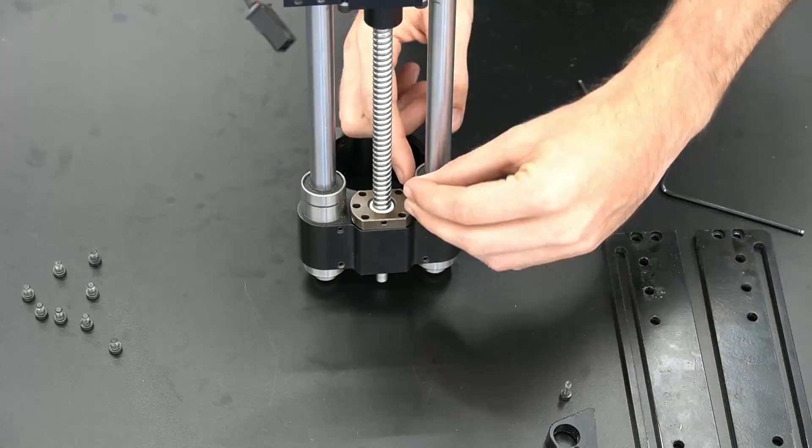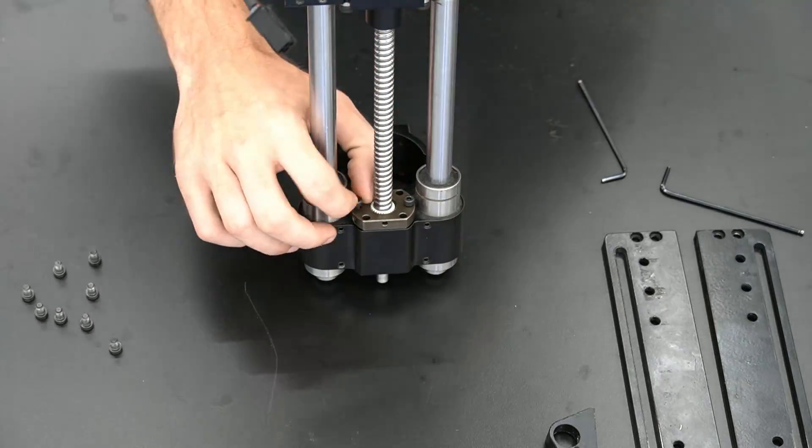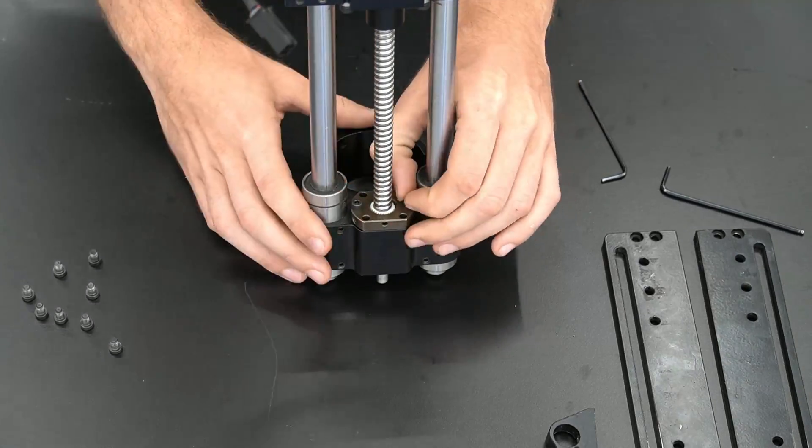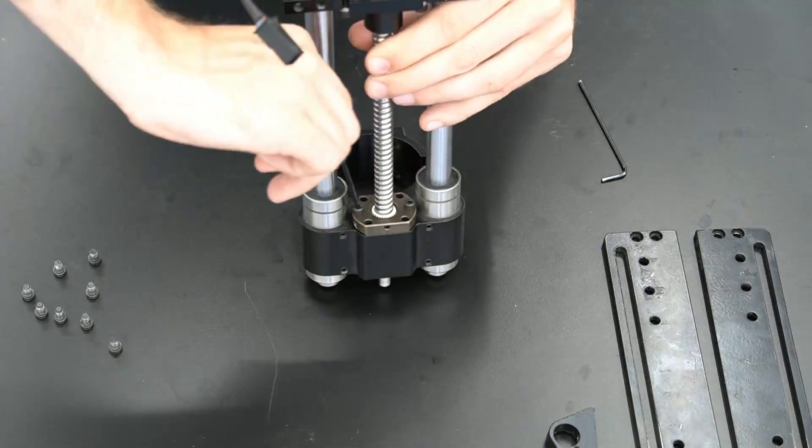Once we're sure we have the correct orientation, we will slide the spindle mount back on and we'll use the two bolts we removed earlier to secure it in place.